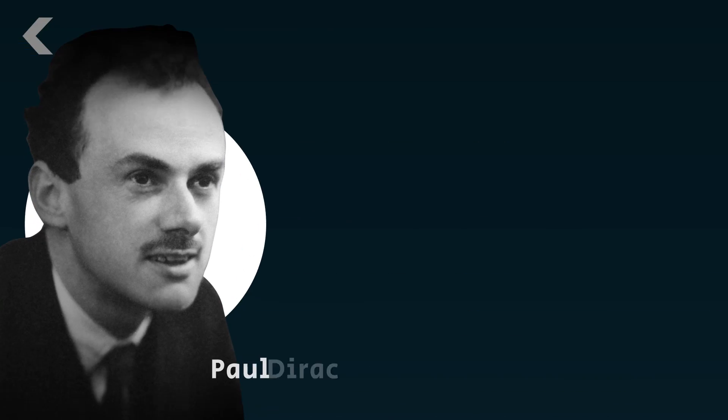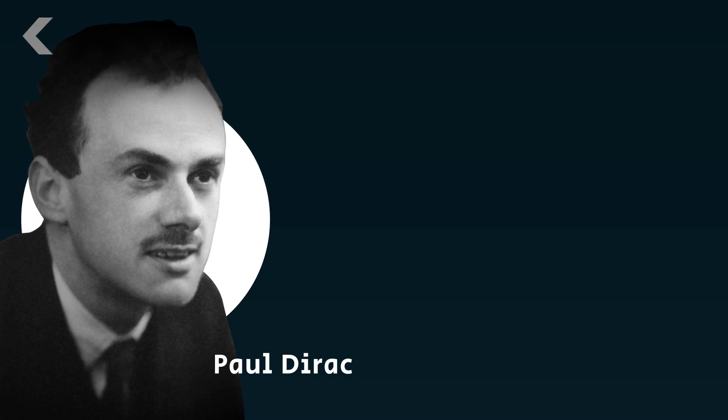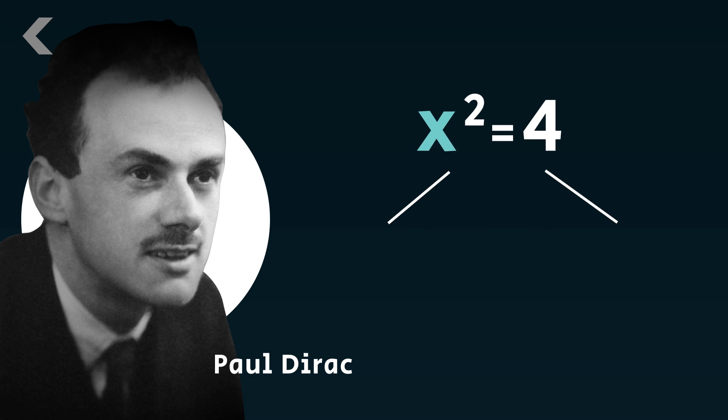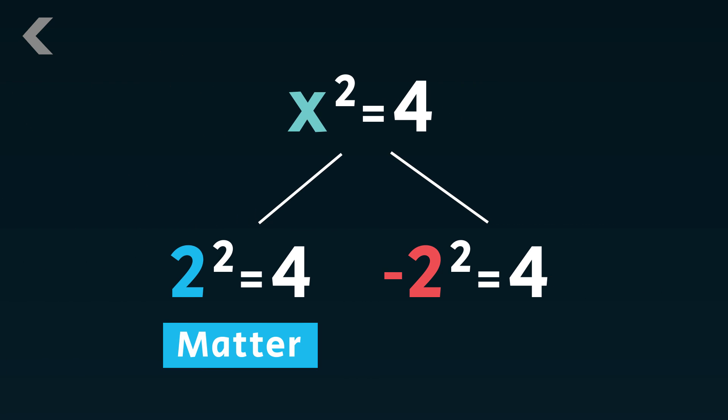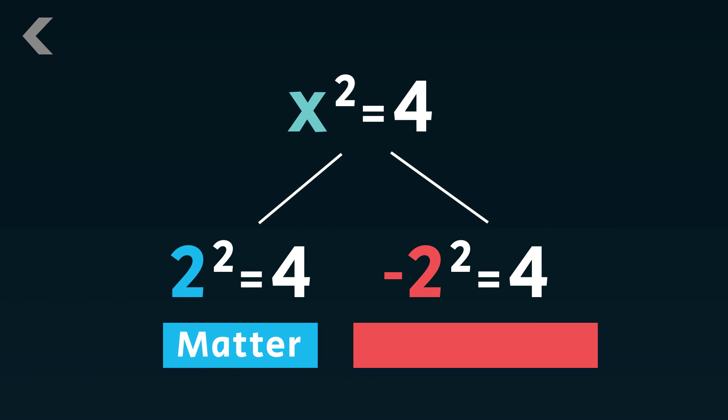Around the turn of the last century, Einstein was working on the theory of relativity, and other physicists were trying to figure out how the tiniest parts of our universe worked, called quantum theory. This was all done with math — lots and lots of math. At one point, a physicist named Paul Dirac realized x squared equals 4 has two answers: two and negative two. This means if matter is the two, there must be some kind of opposite to fit into the negative two. Physicists called this opposite antimatter.